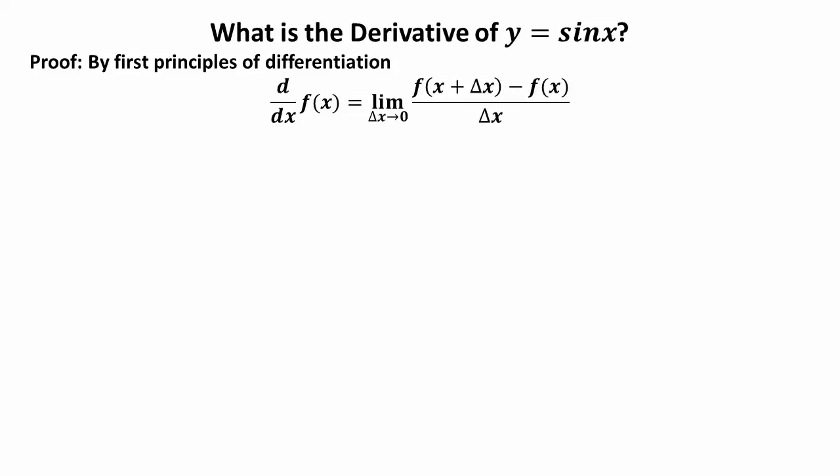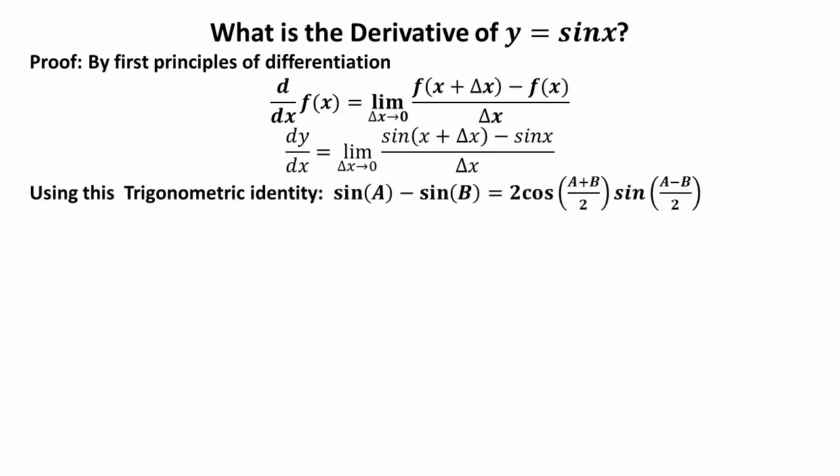By using this formula we obtain dy/dx = limit as Δx tends to 0 of [sin(x + Δx) - sin(x)] over Δx. Now we will use the trigonometric identity: sin(A) - sin(B) = 2 cos[(A+B)/2] sin[(A-B)/2].